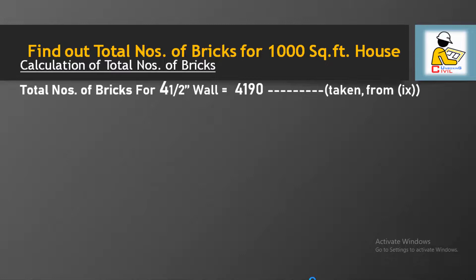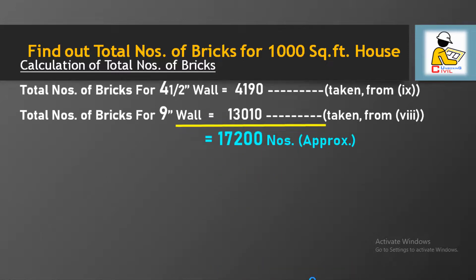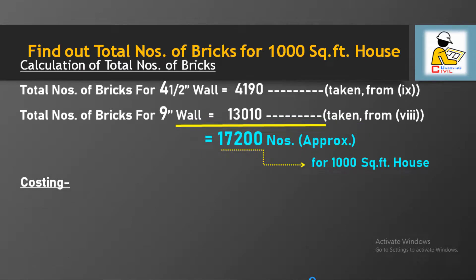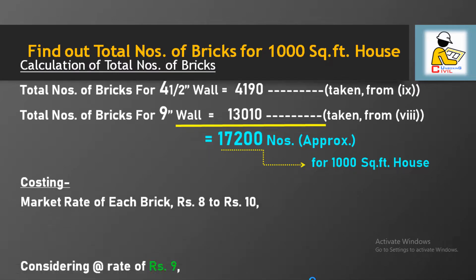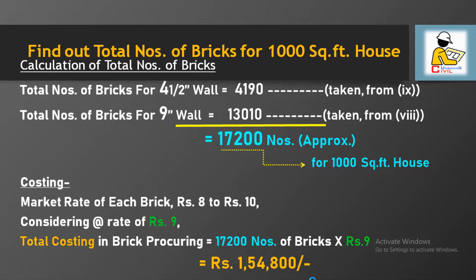Now in the final step, adding 4,190 bricks from the 4.5 inch wall and 13,010 bricks from the 9 inch wall, we get a total of approximately 17,200 non-modular bricks required for a typical 1000 square feet single-storey house. At a market rate of around ₹8 to ₹10 per brick — taking ₹9 per brick — the total cost comes to approximately ₹1,54,800 for brick procurement.